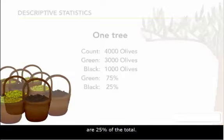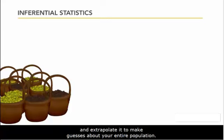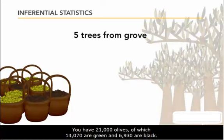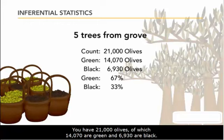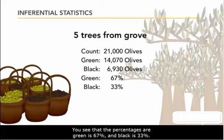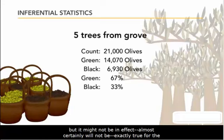For inferential statistics, you take information from part of your population and extrapolate it to make guesses about your entire population. For example, let's say you have a grove of 100 olive trees, and you take a sample from five of those trees. You have 21,000 olives, of which 14,070 are green and 6,930 are black — green is 67% and black is 33%. That's true for those five trees, but it almost certainly will not be exactly true for the entire grove of 100 trees.